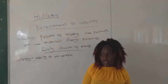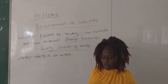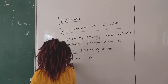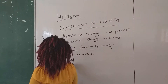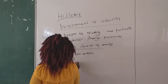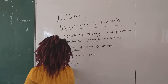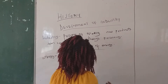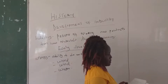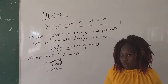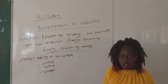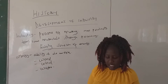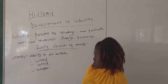The early sources of energy include wood, wind, and water. These are the sources which have been used from a long time ago. Now let's look at wood.